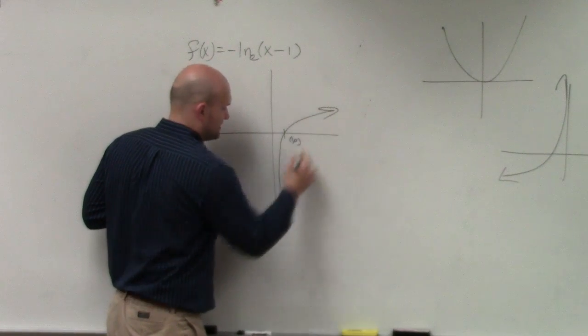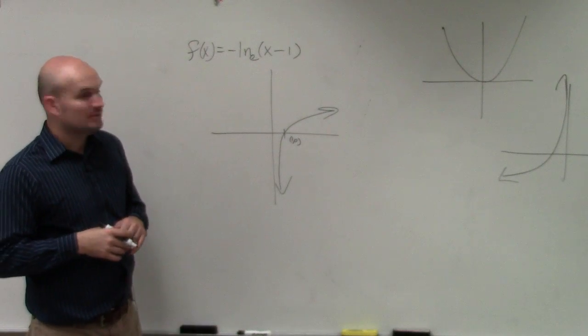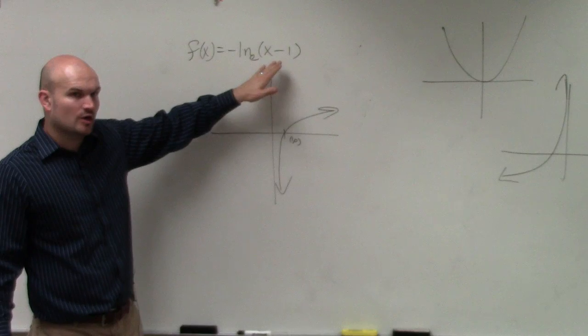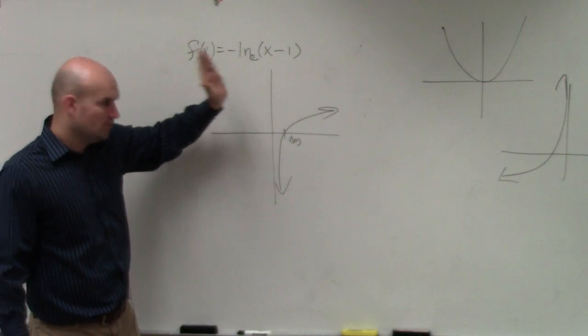So the graph looks something like that. Now we just need to look at what's our only transformation. Our only transformation is x minus 1, which is telling us to shift the graph to the right 1.